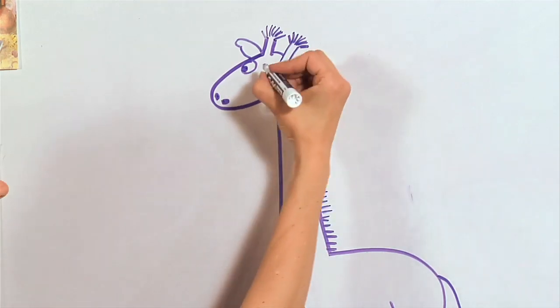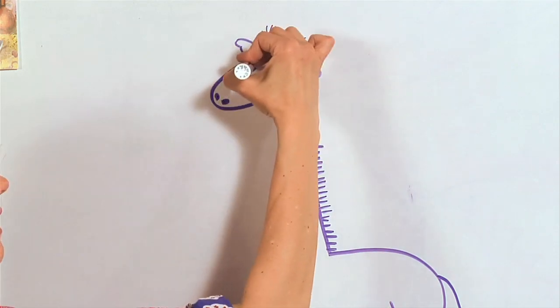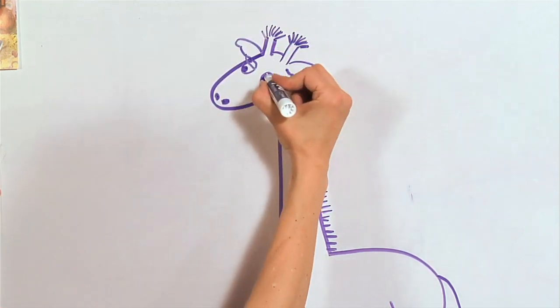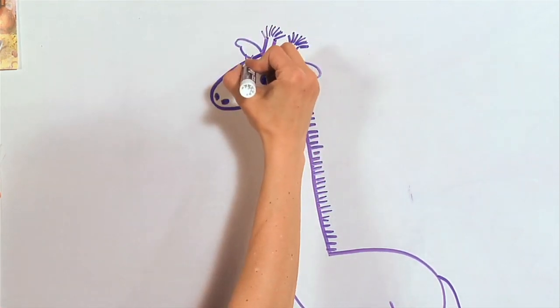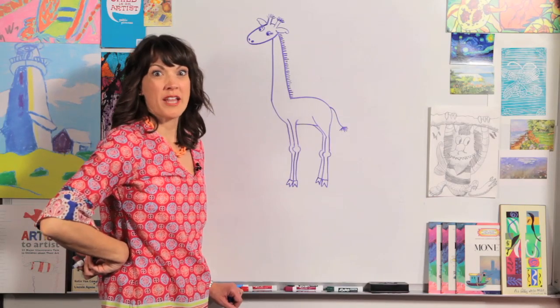And then we're going to draw a line across the eye like that, just a little bit curved, and across this eye like that. If you want to add a little bit of eyelashes, you can. What's missing? Just the spots, right?